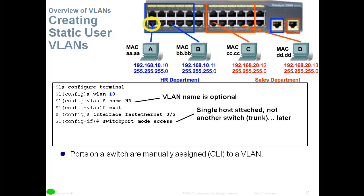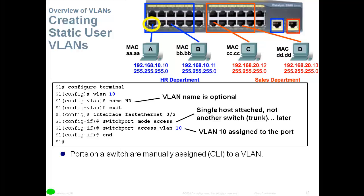A port can be in two modes: access or trunk. All end devices are connected as access ports; when connecting switch to switch, that becomes a trunk port. After setting the mode, type 'switchport access vlan 10' to assign the port to VLAN 10. This moves the port from the default VLAN 1. Cisco recommends moving all ports off VLAN 1 — VLAN 1 shouldn't have any ports assigned to it, which we'll discuss more in the security section.